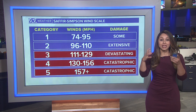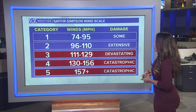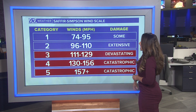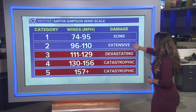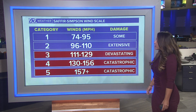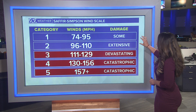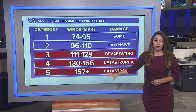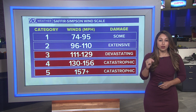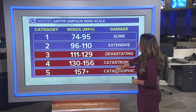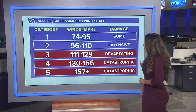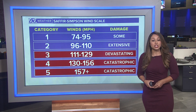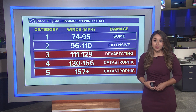There are actual categories we monitor — categories one through five of hurricane status. Categories one and two could bring some to quite a bit of extensive damage. Of course, we always watch those very closely, but it's when it gets to a major hurricane status — anywhere between category three to five — that we're talking about devastating to catastrophic impacts.